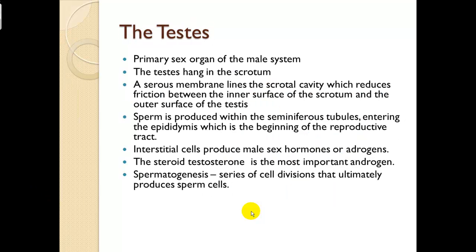The testes are the primary sex organs of the male system. They hang in the scrotum; a serous membrane lines the scrotal cavity, reducing friction between the inner surface of the scrotum and the outer surface of the testes. Sperm is produced within the seminiferous tubules, entering the epididymis, which is the beginning of the reproductive tract. Interstitial cells produce male sex hormones and androgens, with the steroid testosterone being the most important androgen. Spermatogenesis is a series of cell divisions that ultimately produce sperm cells.